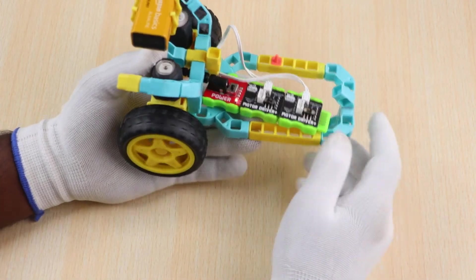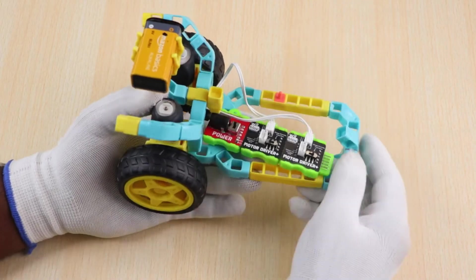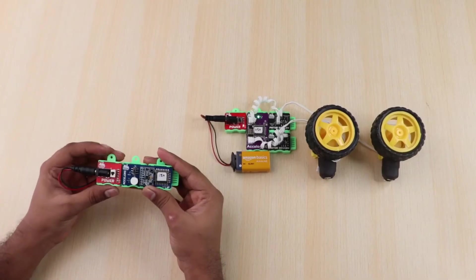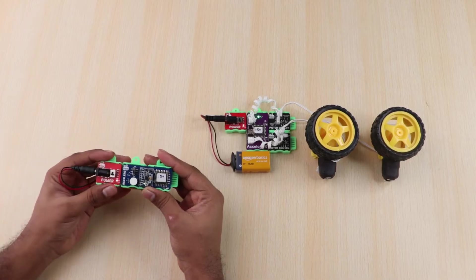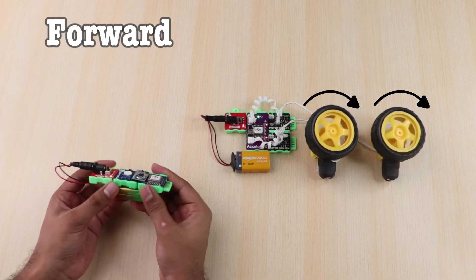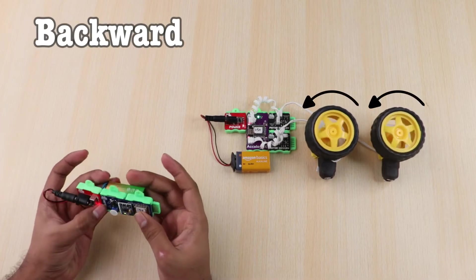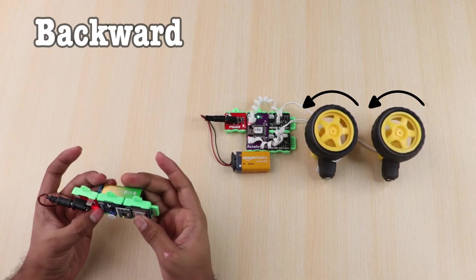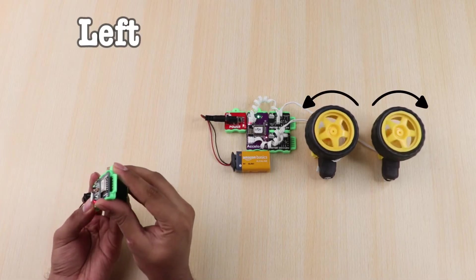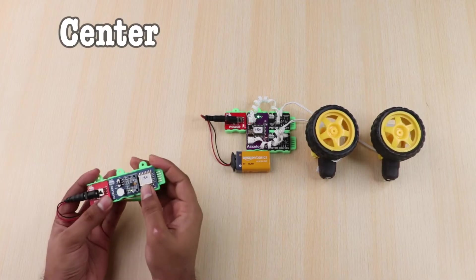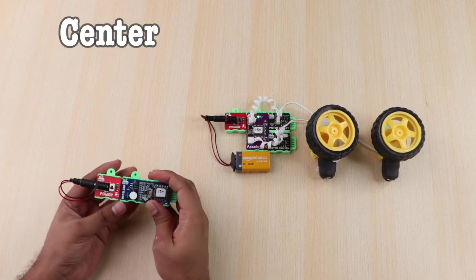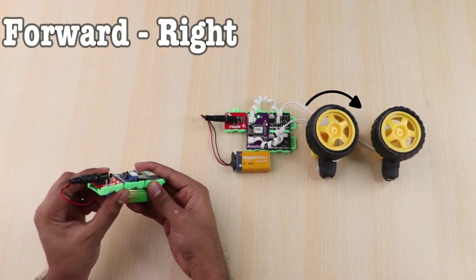How about controlling it from hand gesture? For hand gestures we will use Axelero blocks which has an acceleration sensor and senses our hand movement. Join the Axelero blocks to the power blocks and let's see the movements real quick.